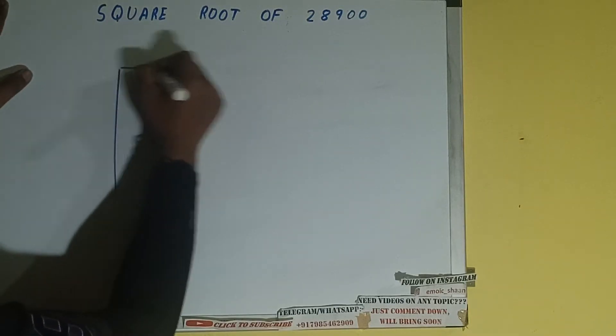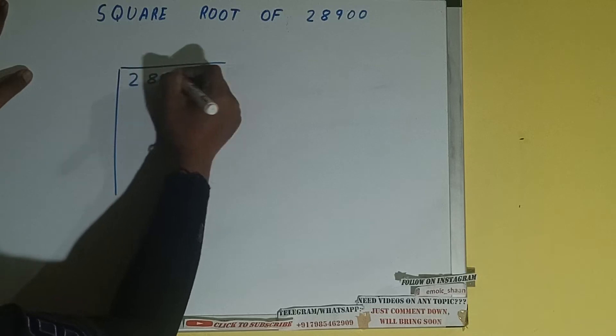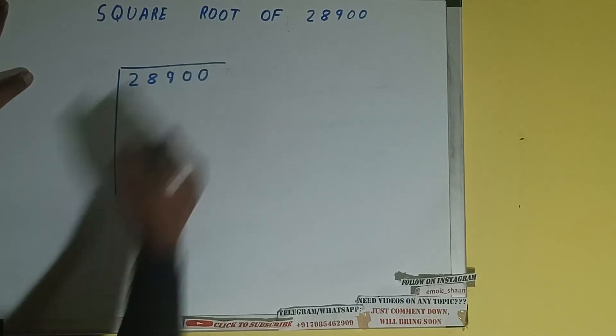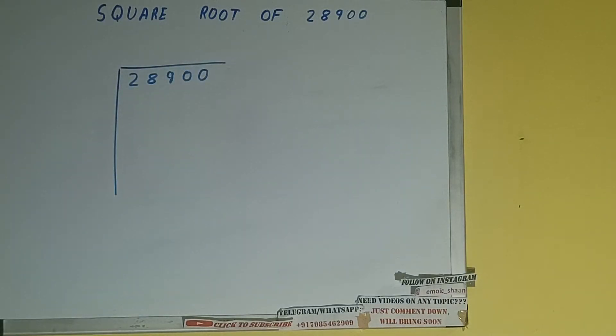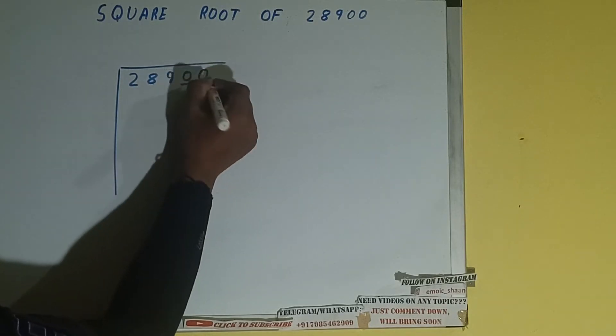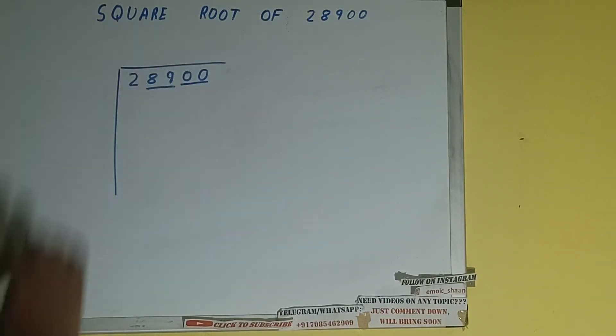So first of all we need to write the number like this: 28900. Next thing we need to do is form pairs from the right hand side. So one pair will be this, one pair will be this, and these two will be left out. So first we'll divide this two and then we'll bring down the pairs.